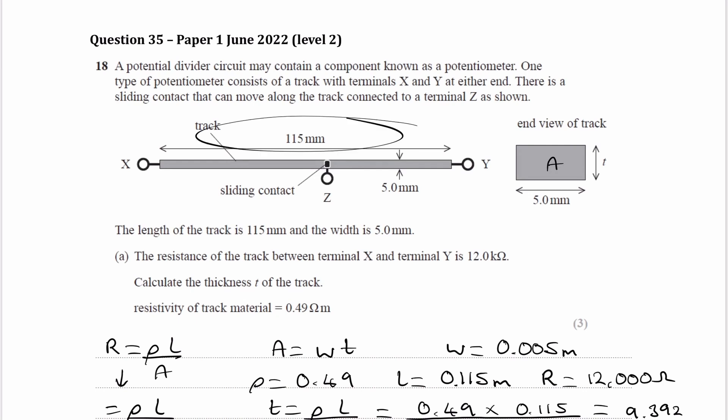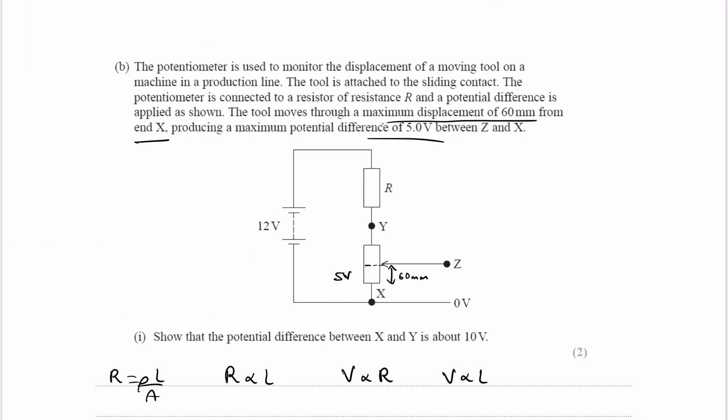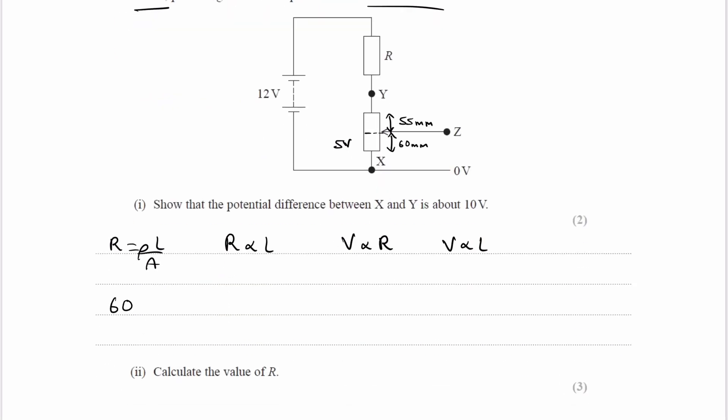Going back to the previous part, we know the length of the entire resistor X to Y is 115 millimeters. Therefore this distance here should be 55 millimeters. Those ratios of lengths, 60 to 55, should be the same as the ratio of voltages, 5 to some unknown value V. If those two ratios are equal, we can form an equation: V over 5 equals 55 over 60. Bring the 5 up. V is then 55 over 60 times 5, which gives us 4.583 volts. That's the voltage across this top part of the resistor. Therefore the voltage across the entire resistor from X to Y would be those two added up: 5 plus 4.583, or 9.583, approximately 10 volts.